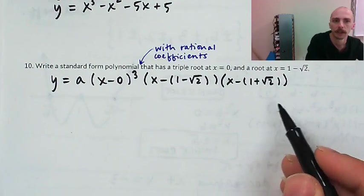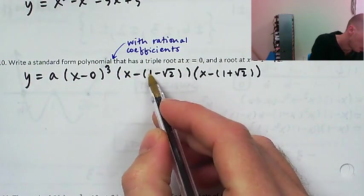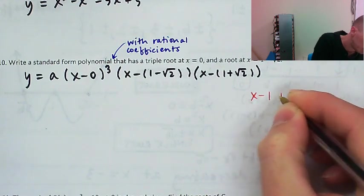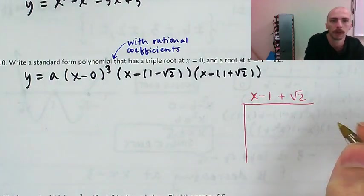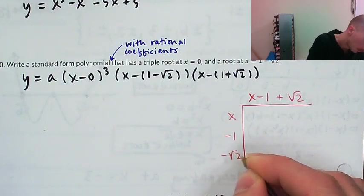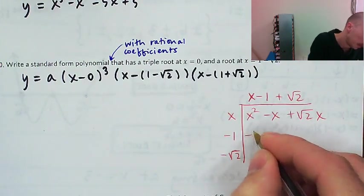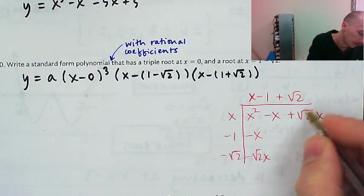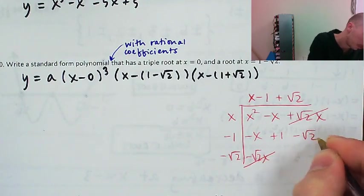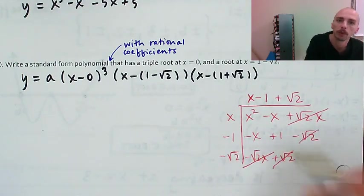Now I'm going to do this multiplication of the conjugate pair. If I distribute the negative, I'll have x minus 1 plus the square root of 2, multiplied by x minus 1 minus the square root of 2. That gives x squared minus x plus root 2x, then negative x and negative root 2x — those cancel. Negative 1 times negative 1 is positive 1, and the root 2 terms also cancel. Finally, positive root 2 times negative root 2 gives negative 2.